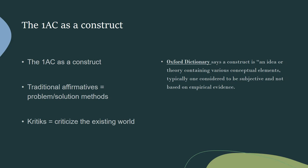Here is your first vocabulary word: construct. When I say the 1AC as a construct, what do I mean? Oxford's Dictionary says a construct is an idea or theory containing various conceptual elements, typically one considered to be subjective and not based on empirical evidence. So because the definition says construct is an idea or theory considered to be subjective, what we are saying is that the 1AC presents a worldview. A worldview can also be known as an assumption. Because the idea is subjective, that means it is not a fact — it is not a complete truth, but an assumption about the world.